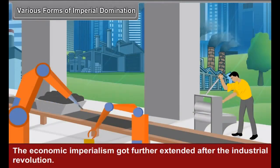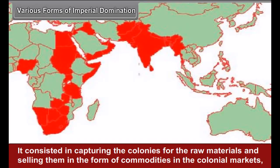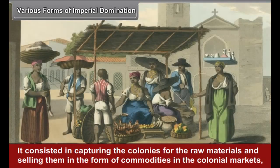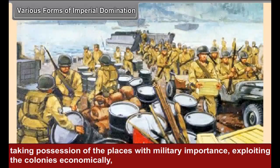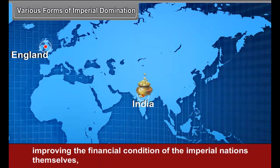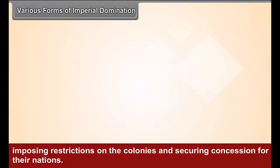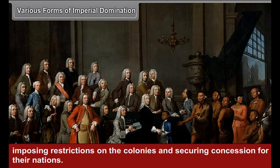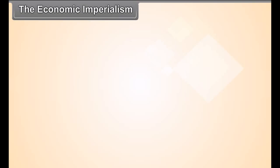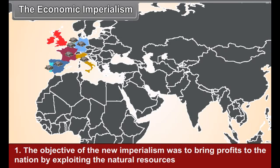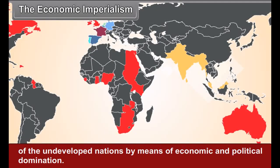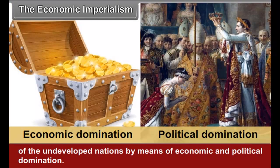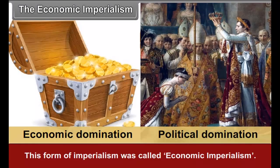The economic imperialism got further extended after the Industrial Revolution. It consisted in capturing the colonies for raw materials and selling them in the form of commodities in the colonial markets, taking possession of places with military importance, exploiting the colonies economically, improving the financial condition of the imperial nations themselves, imposing restrictions on the colonies, and securing concessions for the nations. The objective of the new imperialism was to bring profits to the nation by exploiting the natural resources of undeveloped nations by means of economic and political domination — this form was called economic imperialism.